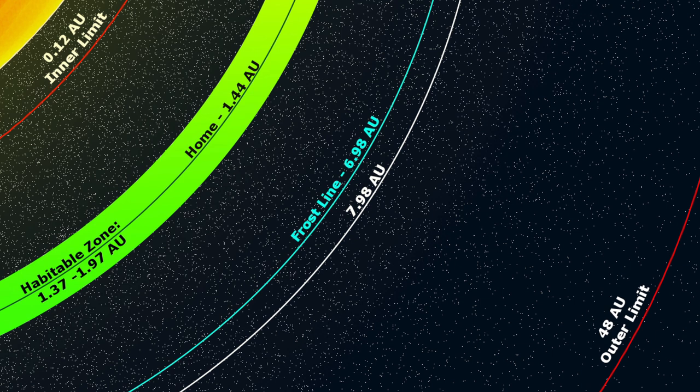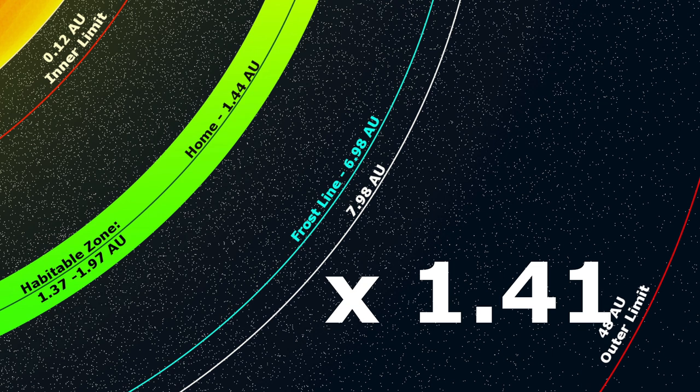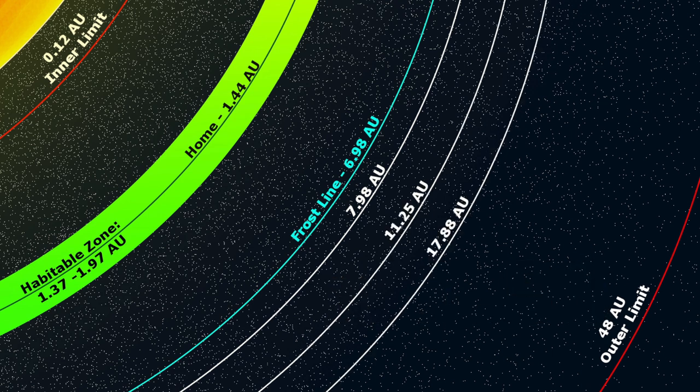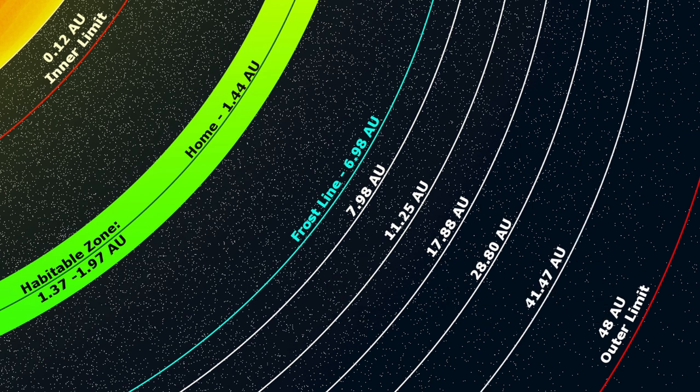Starting at our gas giant, we simply multiply its distance from our star by a number anywhere between 1.4 and 2, and hey presto, we have the next stable orbit out from our star. Repeat this for each orbit until we reach our system's outer boundary, then stop.